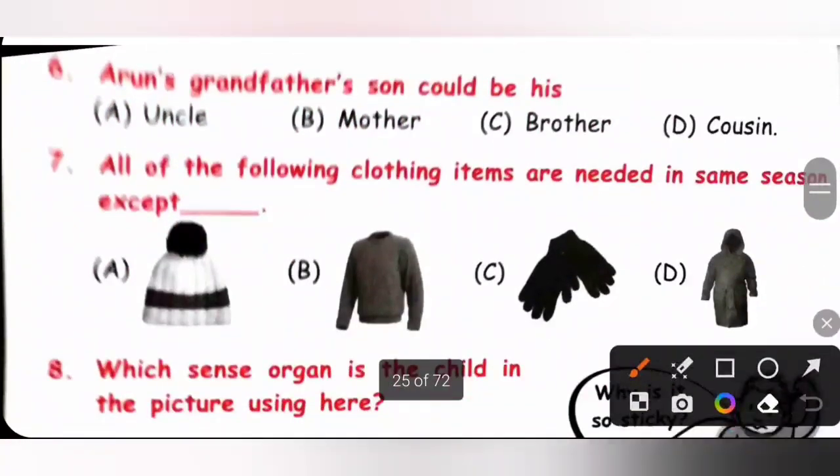Sixth one. Arun's grandfather's son could be his dash. So, Arun's grandfather's son could be his uncle or father. Could be his uncle or father. So, option A is the correct answer.